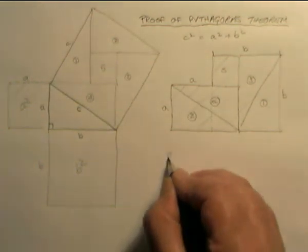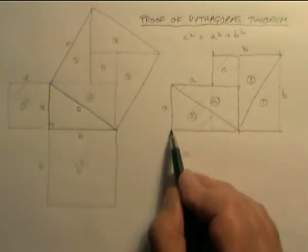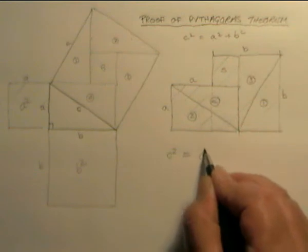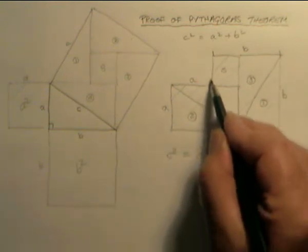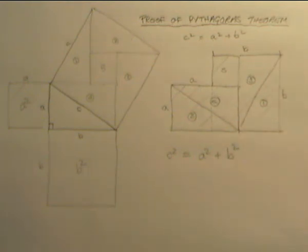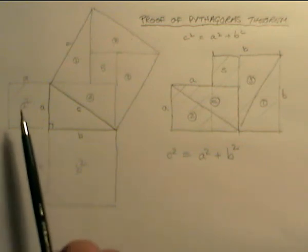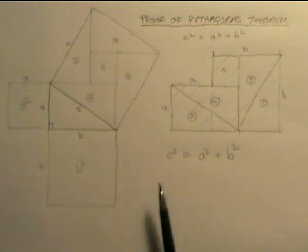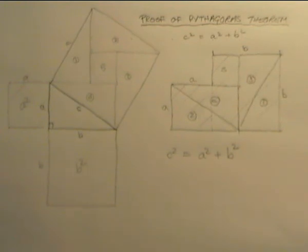So I've proven that the area of this square, which is c squared, is equal to this area which is identical to a squared plus this area which is b squared. There is a very quick and relatively simple proof of the Pythagoras theorem — that the square on the hypotenuse is equal to the sum of the other two squares, or written mathematically, c squared equals a squared plus b squared. A very neat proof of Pythagoras theorem.